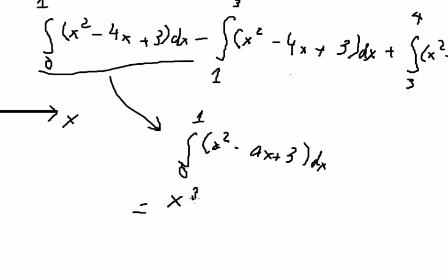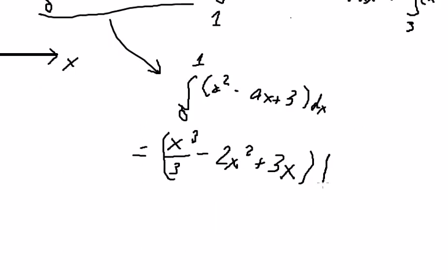We put number 1 and number 0 here, and we got 4 over 3.